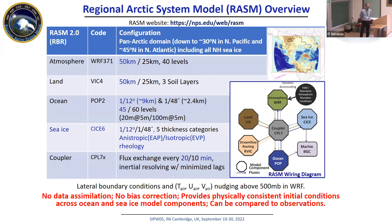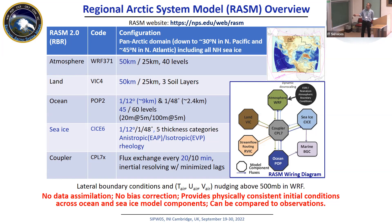A very brief one-slide overview of the model: it's equivalent to an Earth System Model, so it has all the components — the atmospheric component, the sea ice component, the ocean component, the land hydrology — and we also have marine biogeochemistry both in sea ice and the ocean. Everything is tied together by the flux coupler.